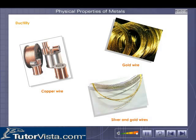Ductility: most metals are ductile. A substance is said to be ductile if it can be drawn into wires by stretching. Gold is a highly ductile metal — one gram of gold can be drawn into a wire 3240 meters long.